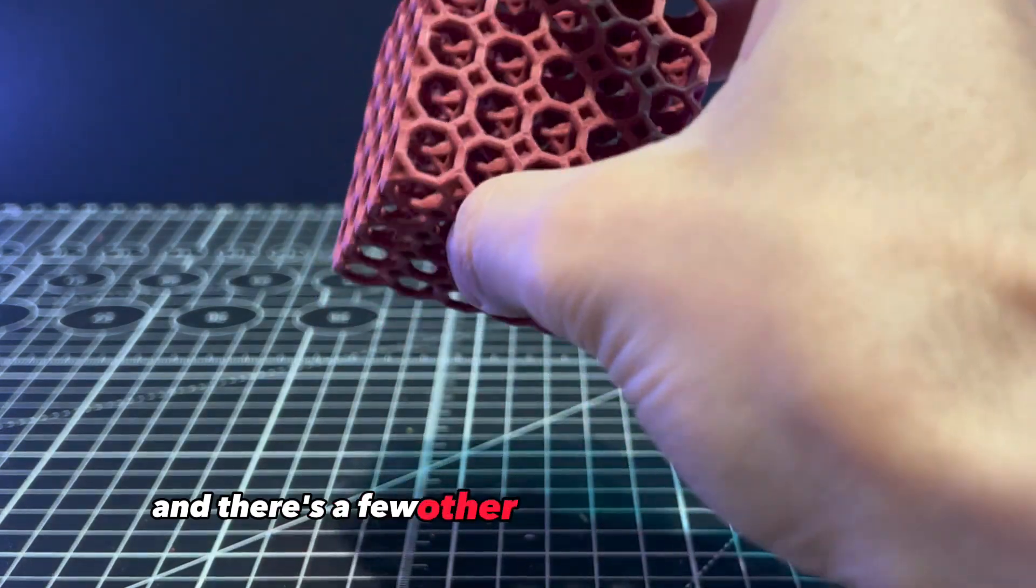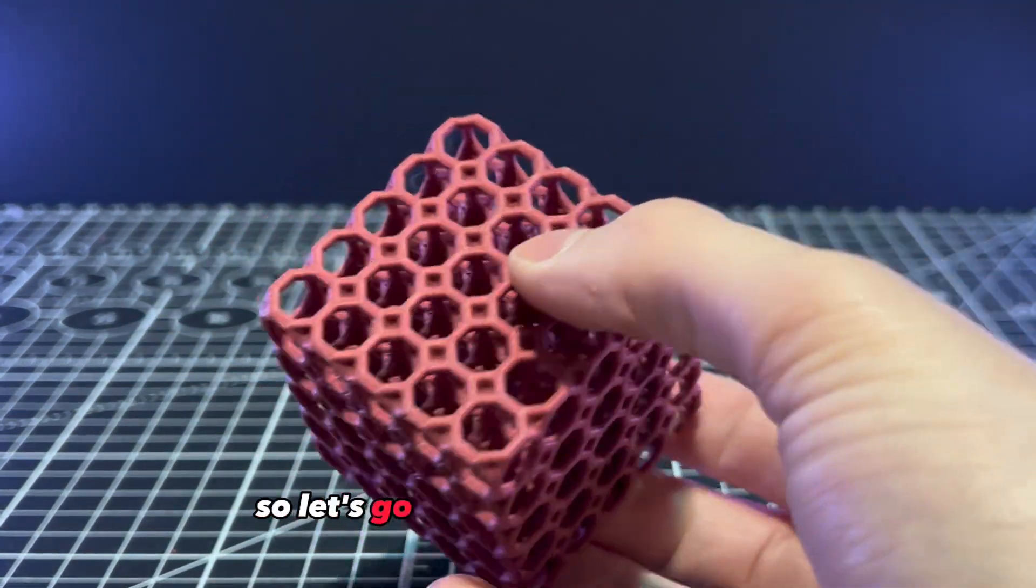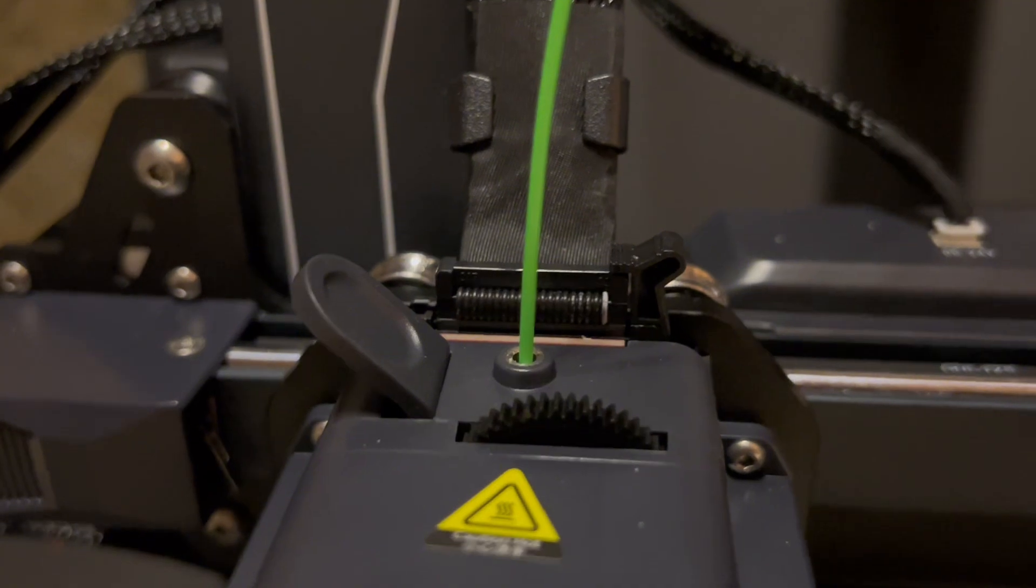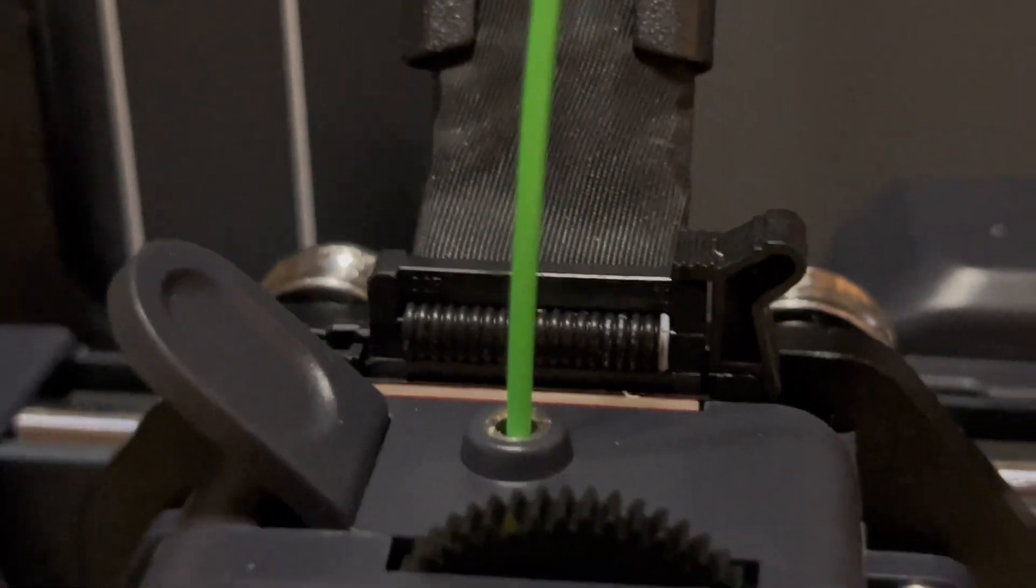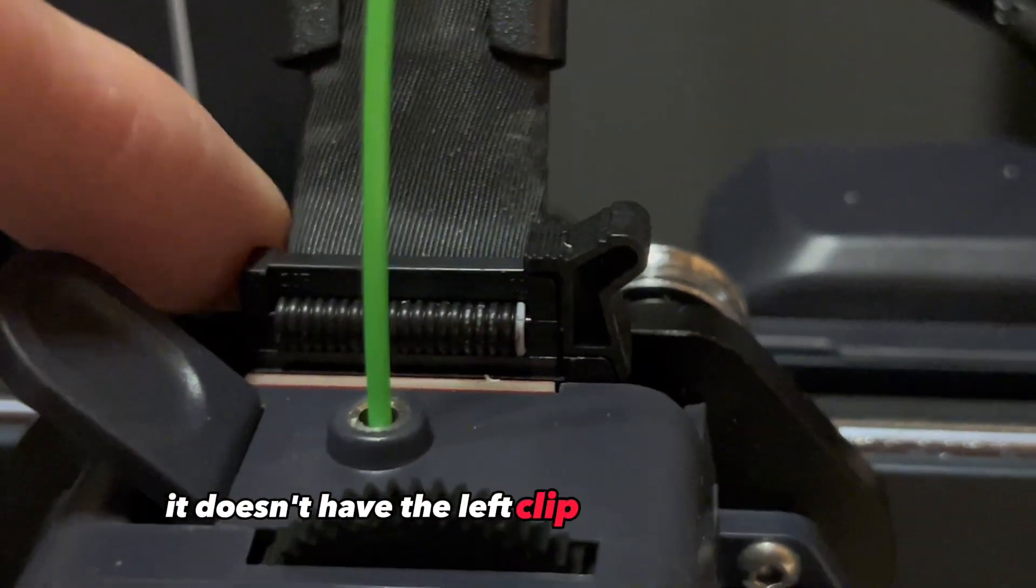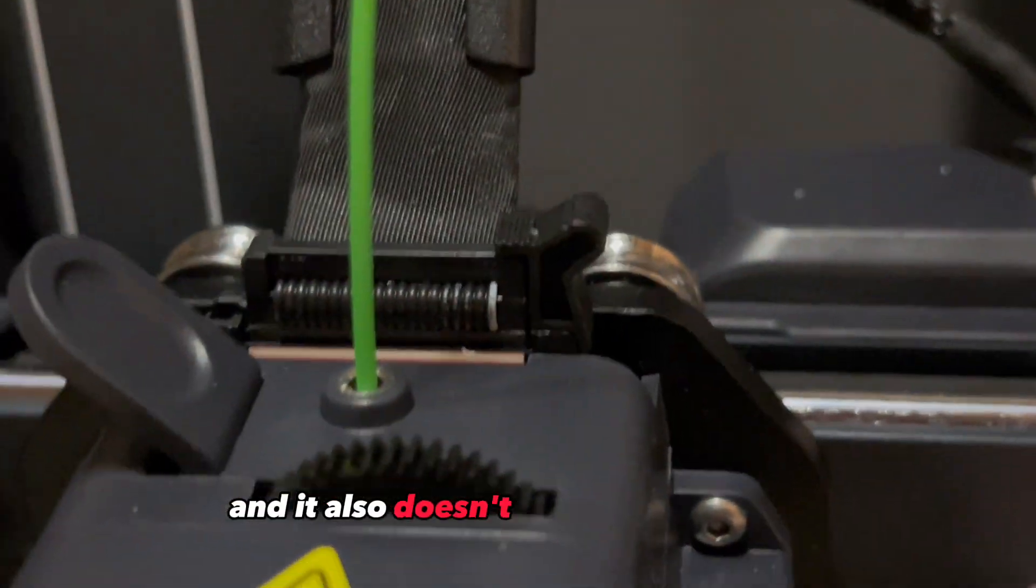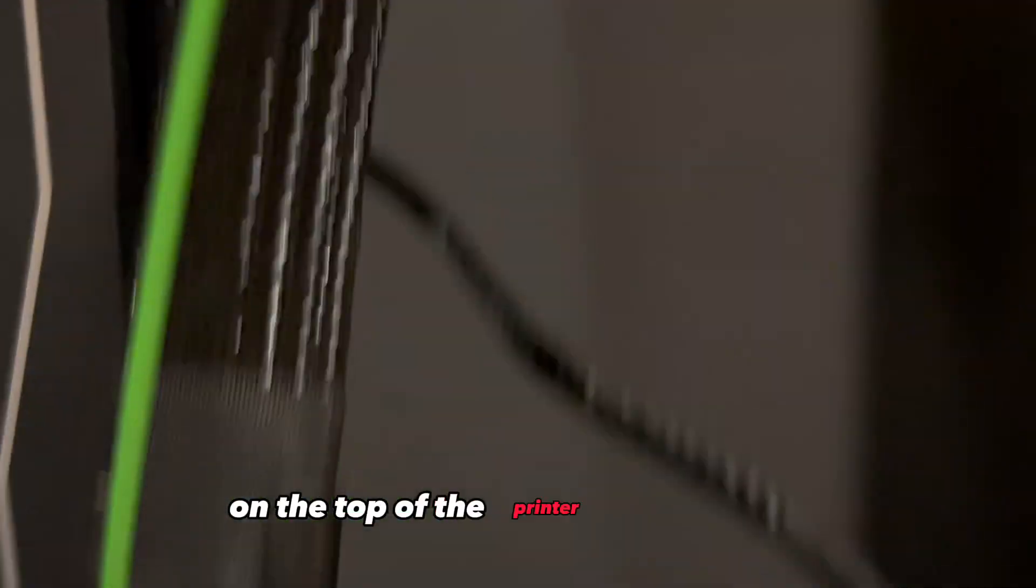There are a few other pet peeves I have about the machine. So let's go over and check that out. Here's what's wrong with my Neptune 4 Pro. It doesn't have the left clip to secure the cable, and it also doesn't have a diffuser bar on the top of the printer for the lights.